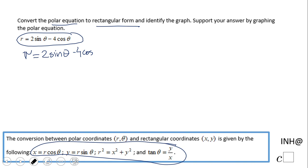So we're going to multiply by r here, multiply the other side by r. What do we get? We get r squared equals 2 r sine theta minus 4 r cosine theta.